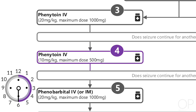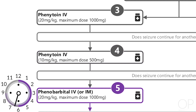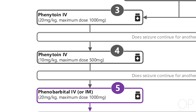If the seizure persists for another 15 minutes, reassess their respiratory status. The next medication to administer would be phenobarbital, either IV or IM, at the dose of 20 milligrams per kilogram with a maximum dose of one gram.